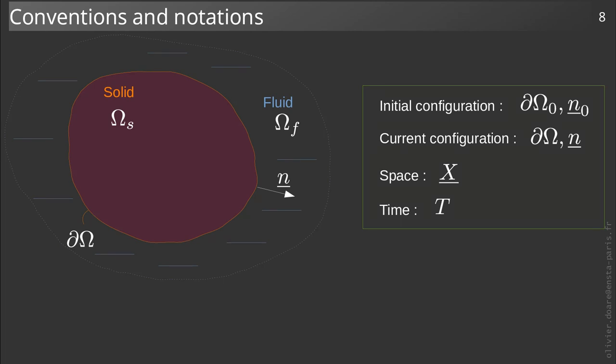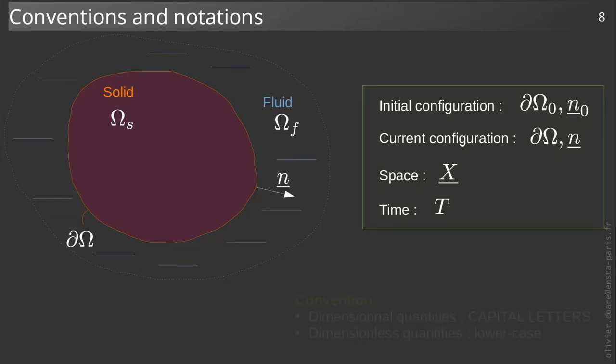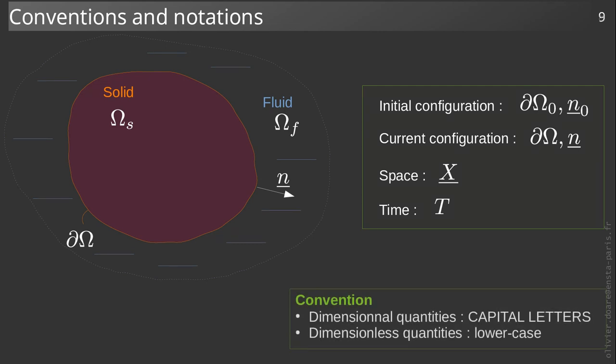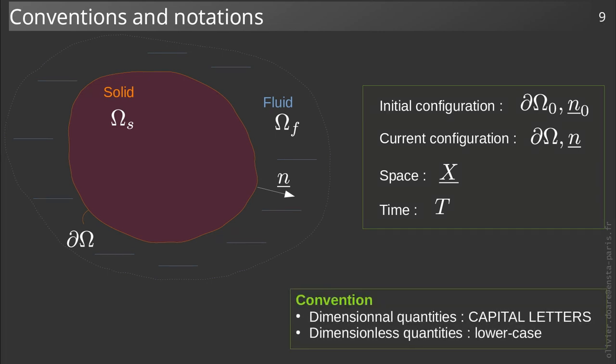Space and time are denoted by capital X and capital T. In this course, we will use capital letters for dimensional quantities, while their lower case equivalent will be used for all dimensionless quantities.